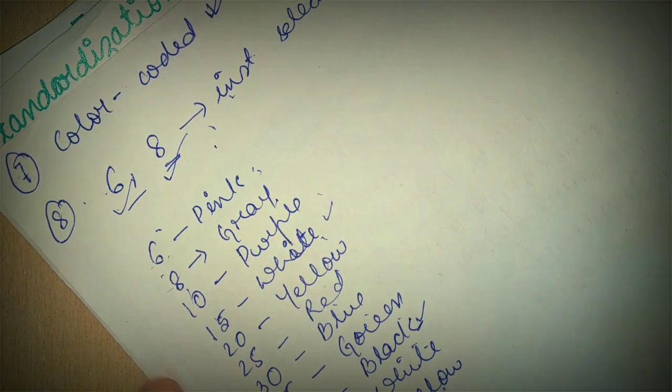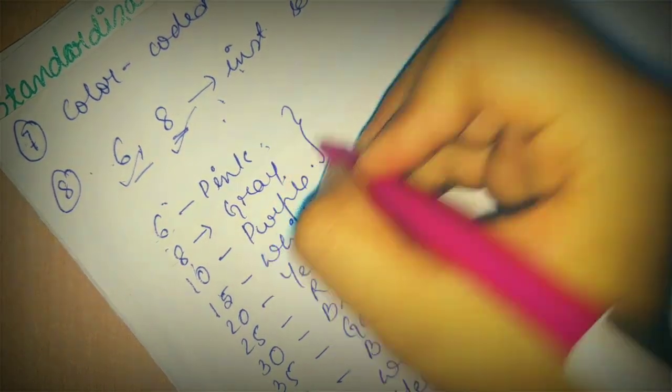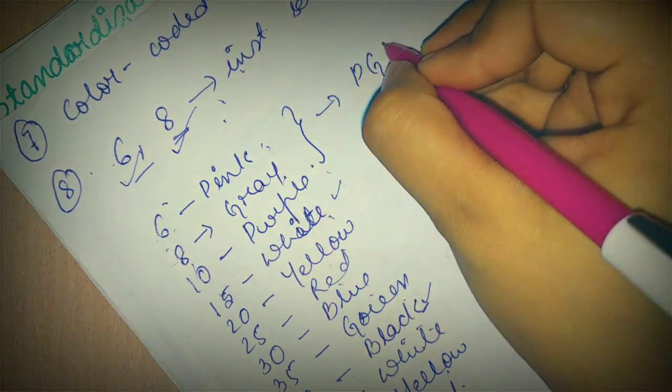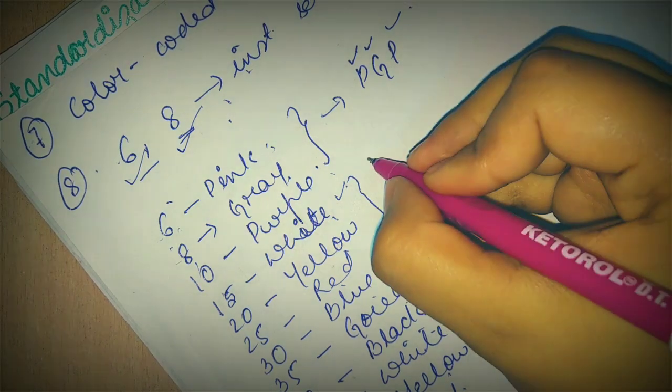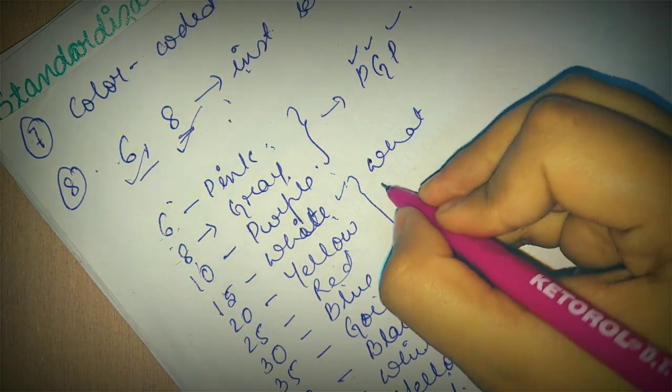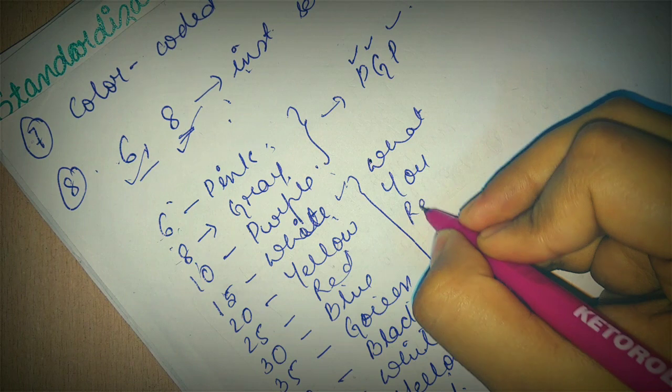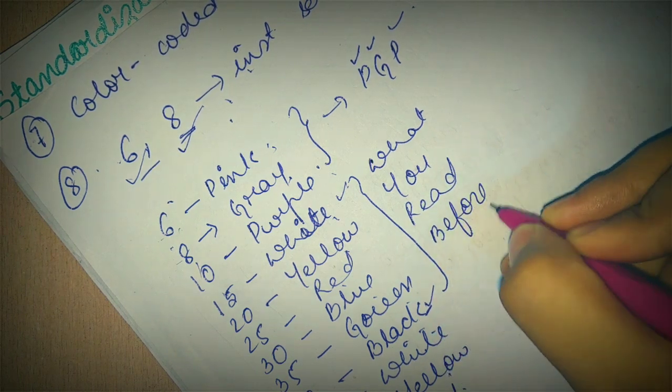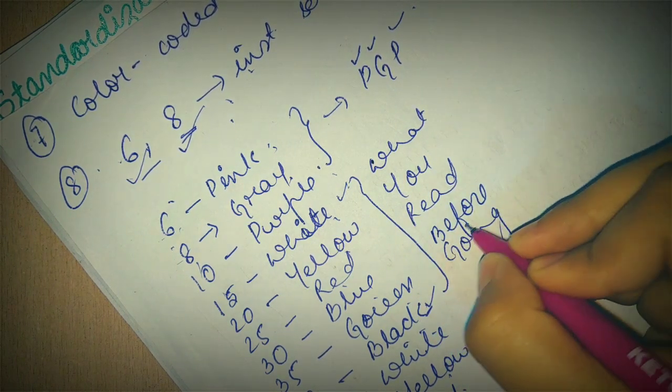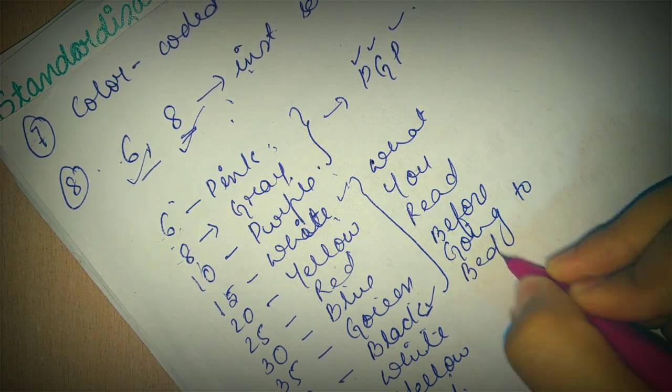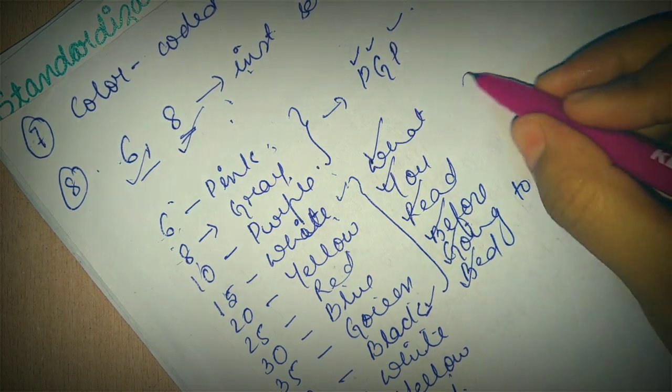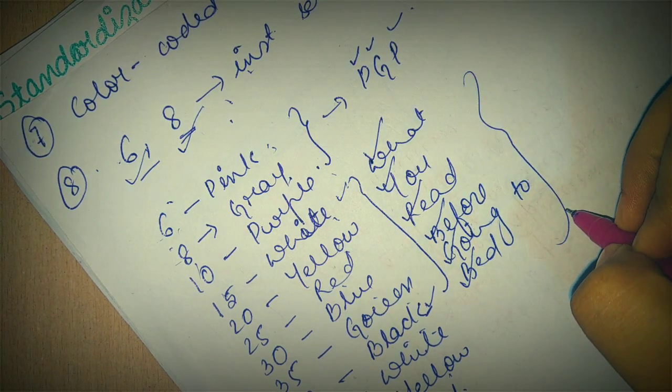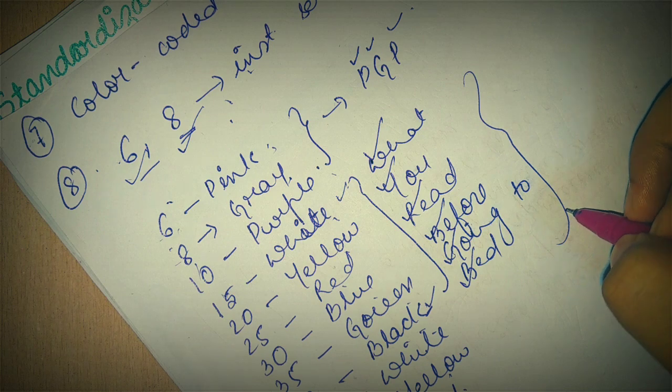Now I will tell you a simple way to remember this. This is pink, gray, purple. It is pink, gray, purple. And from here till black, white to black. You can remember, what you read before going to bed. So it is white, yellow, red, blue, green, and black. So it will be very easy for you.